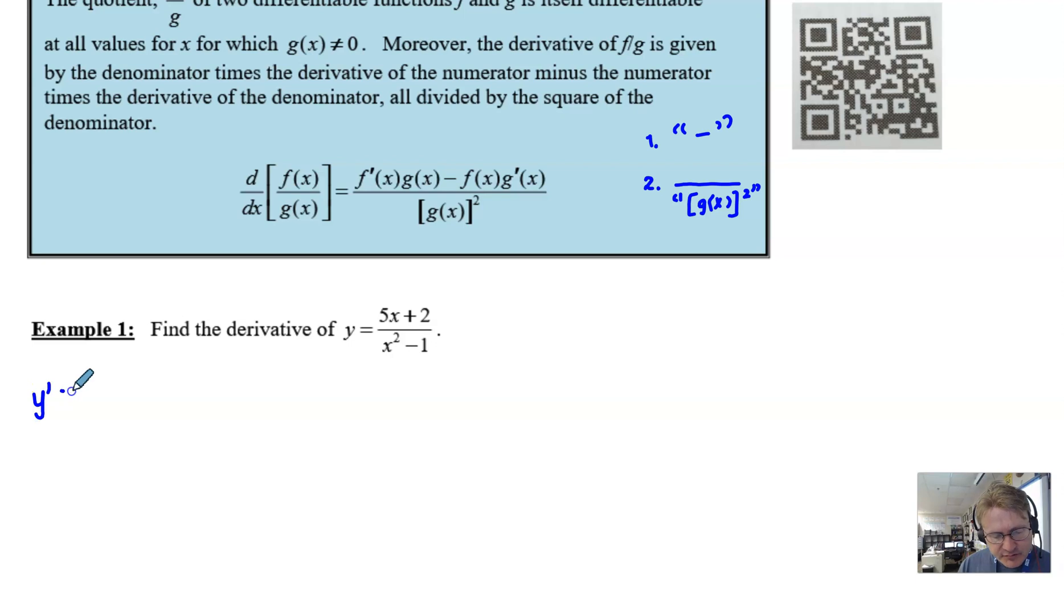So for our derivative, and you can say dy over dx, or you can say y prime, we just kind of start with the top, and it goes f prime times g. Okay, so f prime is 5, right?